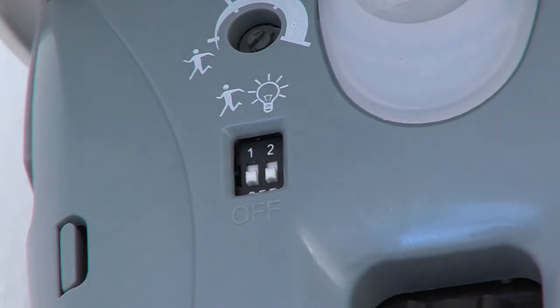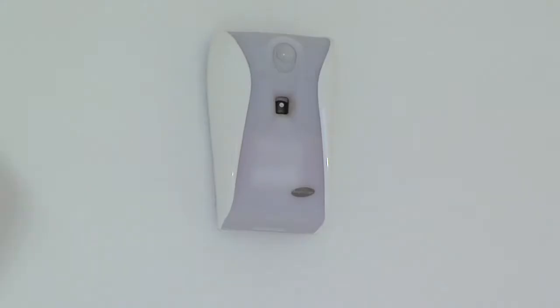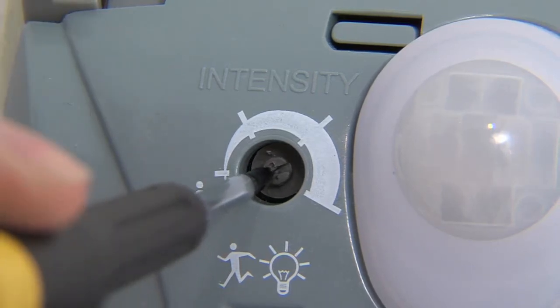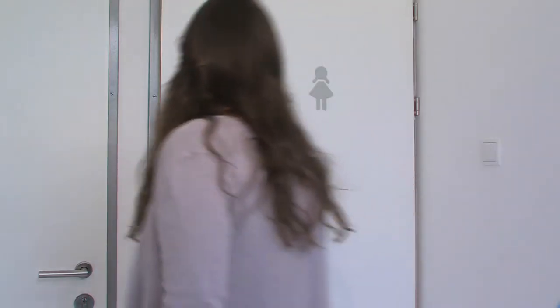The left switch activates the motion detector. This way, the innovative dispenser also responds to motion in the room in addition to the fragrance dispensing intervals. When there is a lot of movement in the room, the fragrance dispensing is intensified. If the intensity regulator is rotated fully to the left, it is switched off.